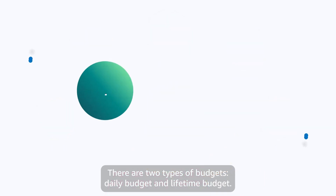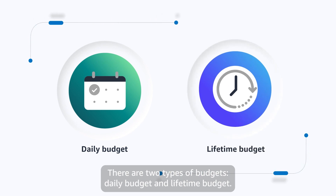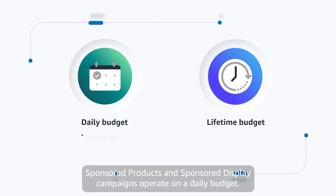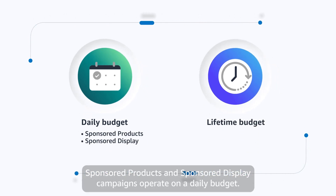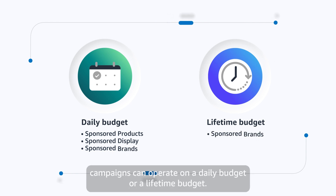There are two types of budgets: daily budget and lifetime budget. Sponsored Products and Sponsored Display campaigns operate on a daily budget. Sponsored Brands campaigns can operate on a daily budget or a lifetime budget.